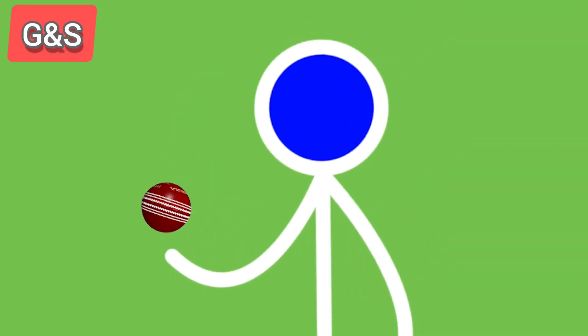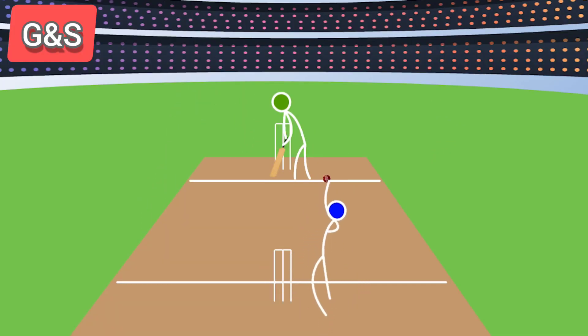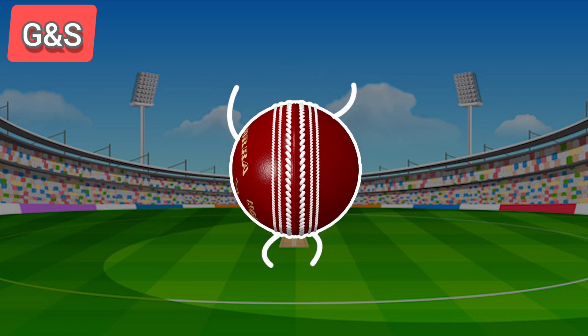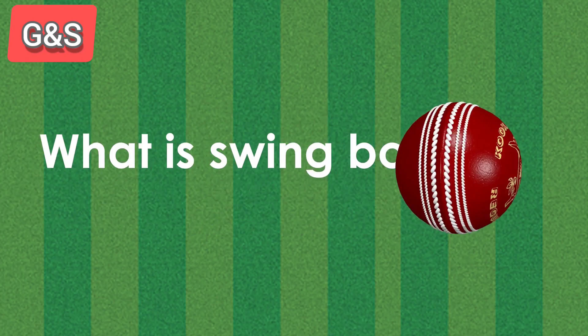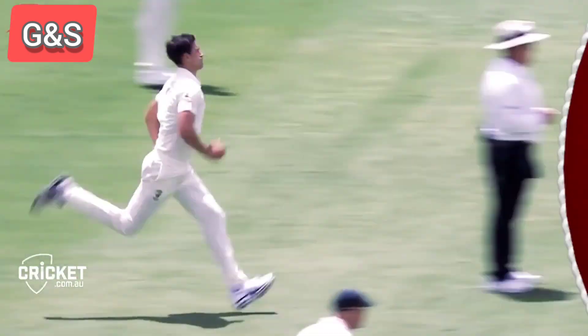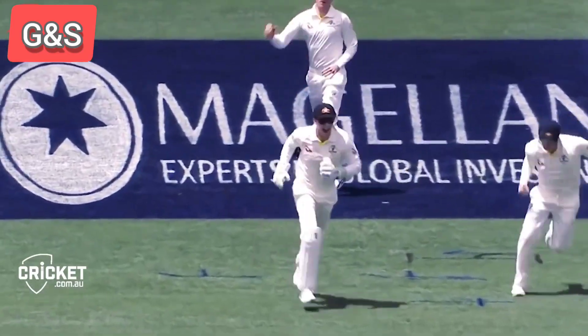Fast bowlers in cricket know how to make the ball dance and sometimes they even make the batsman dance. This dancing ball or swinging ball is a nightmare for batsmen. But what is swing bowling? What is conventional swing? What is reverse swing? Bowlers might know this art quite well, but do you know there is a lot of hidden science behind it that they're using? Watch this video till the end to know all about it.